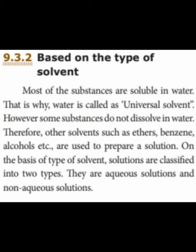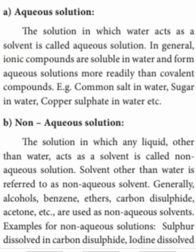Some substances do not dissolve in water, so other solvents such as ethers, benzene and alcohols are used to prepare solutions. On the basis of the type of solvent, solutions are classified into aqueous and nonaqueous solutions. An aqueous solution is one in which water acts as the solvent. Mostly ionic compounds are soluble in water and form aqueous solutions readily. Examples: common salt in water, sugar in water, copper sulfate in water.